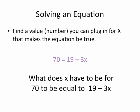So let's come back to the problem that was on the first slide. We want to find a value that is a number that we can plug in for x that makes this equation be true. In other words, what does x have to be for 70 to be equal to 19 minus 3x? Well, we could do something similar to what we did on the previous slide. We could pick a number for x, plug it in, and try it.